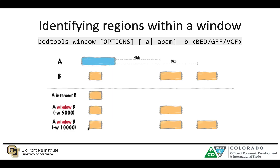Another option — say you want to get intersecting regions and other regions within a specified window — you would use bedtools window. The subcommands are self-explanatory. For example, if you have regions in B and want to find regions within 5 KB of a particular region, you specify the number of bases using the -w option, which returns overlapping regions within that specified window.